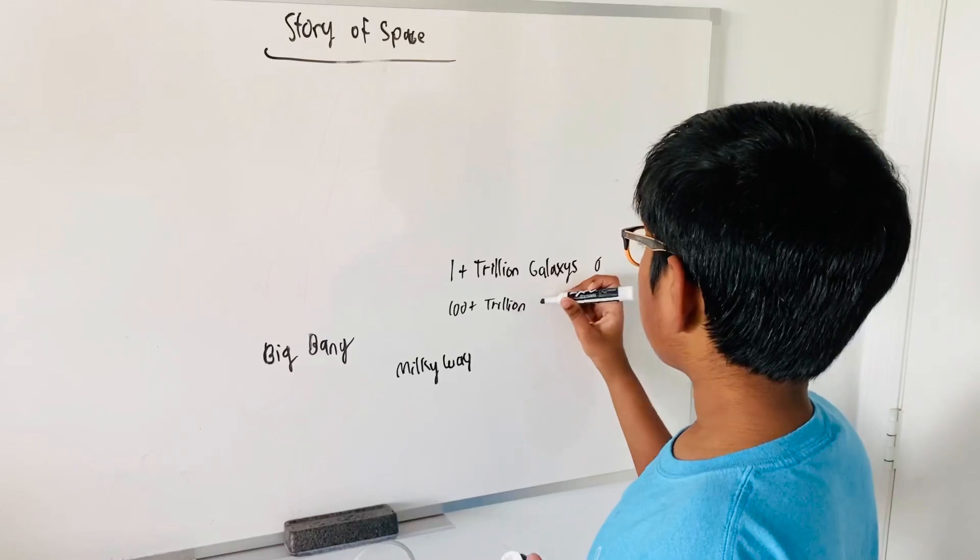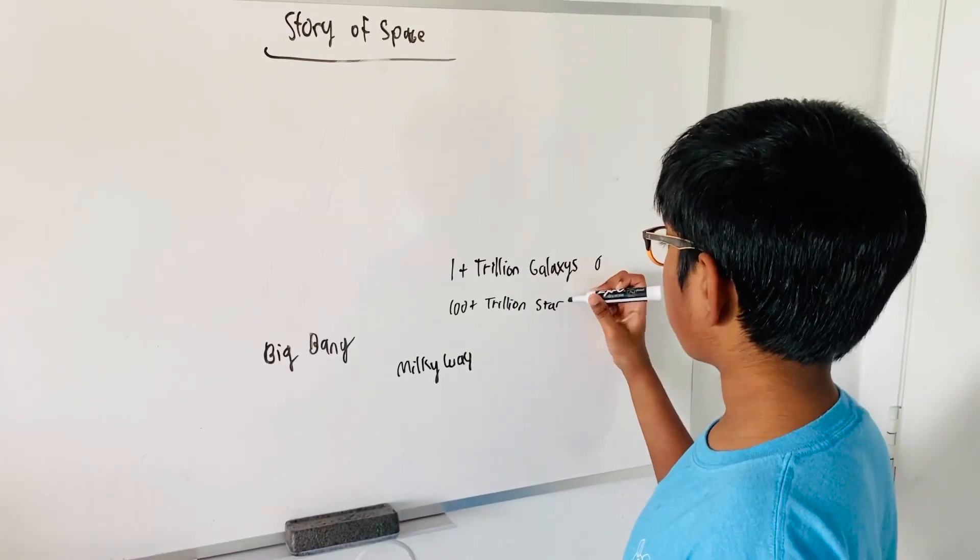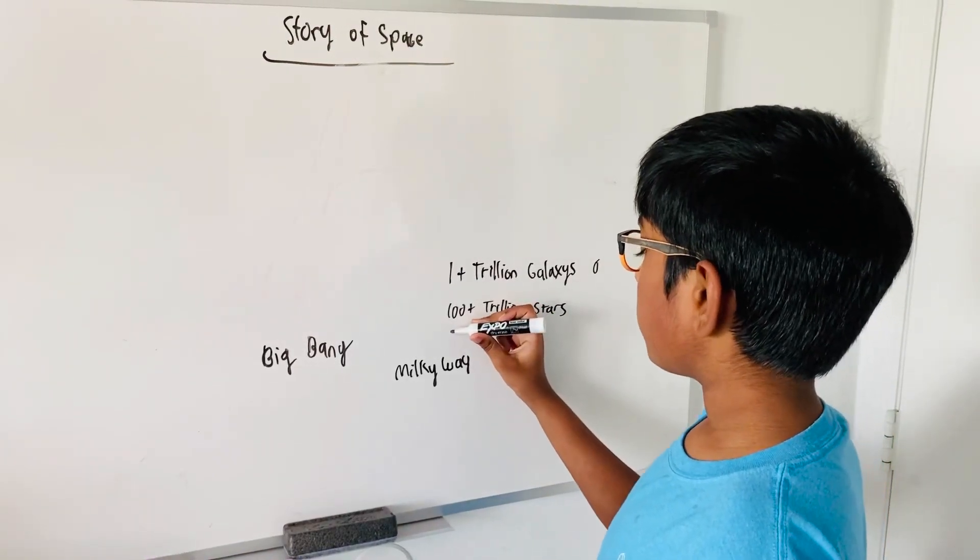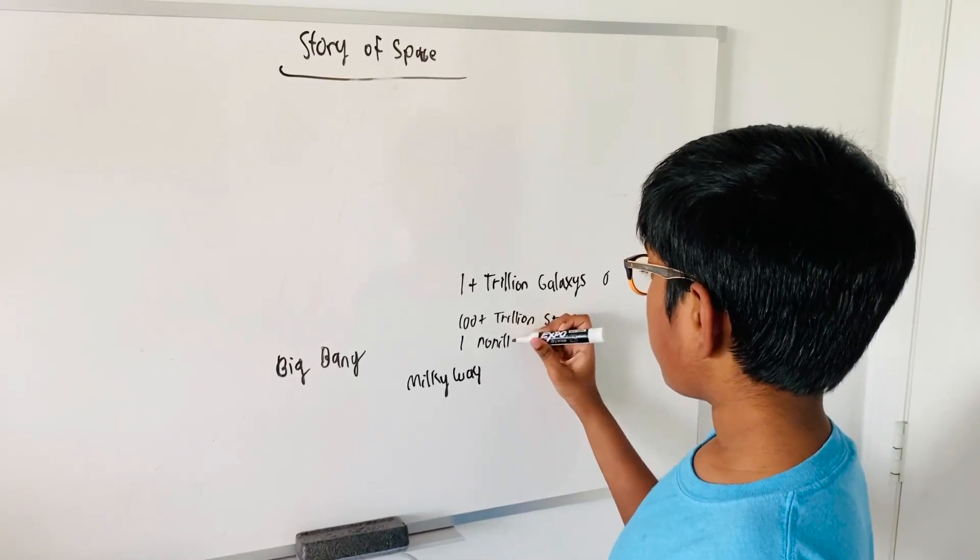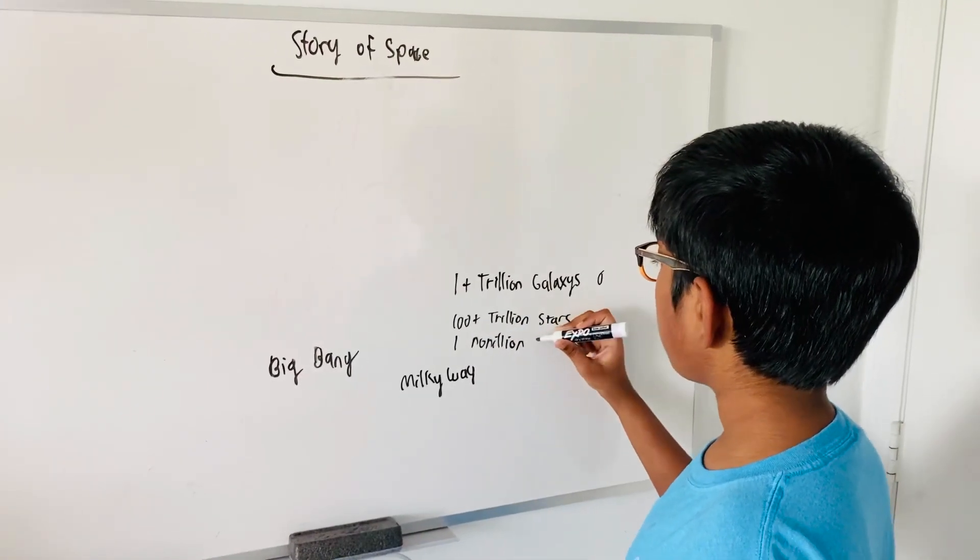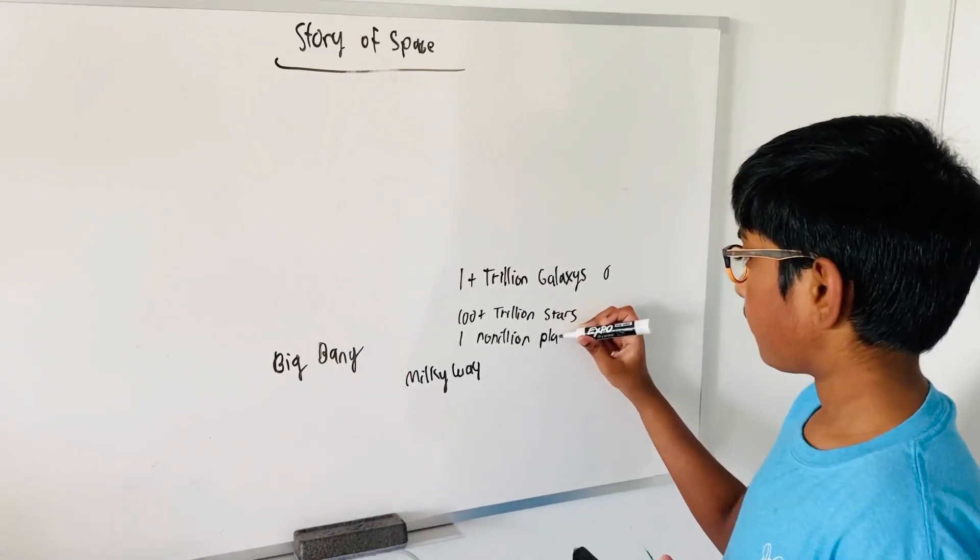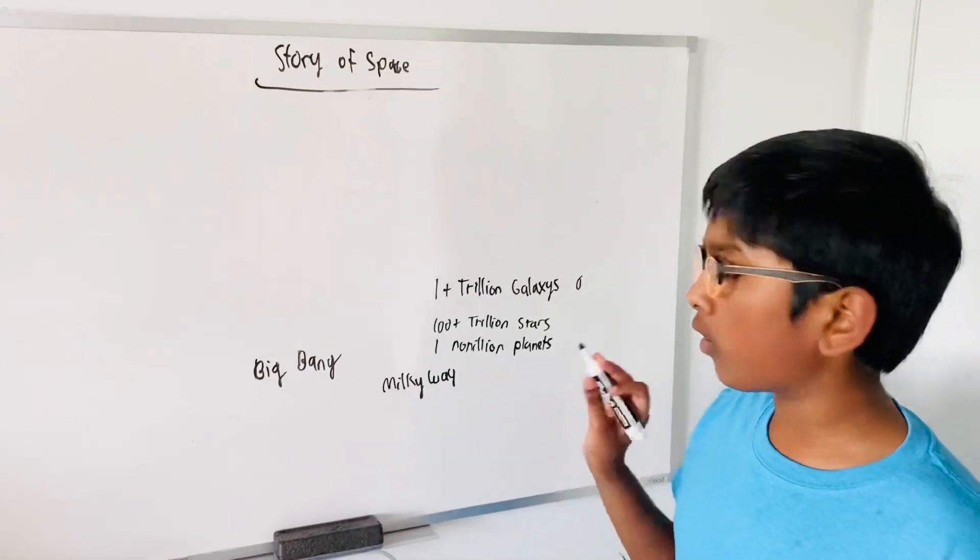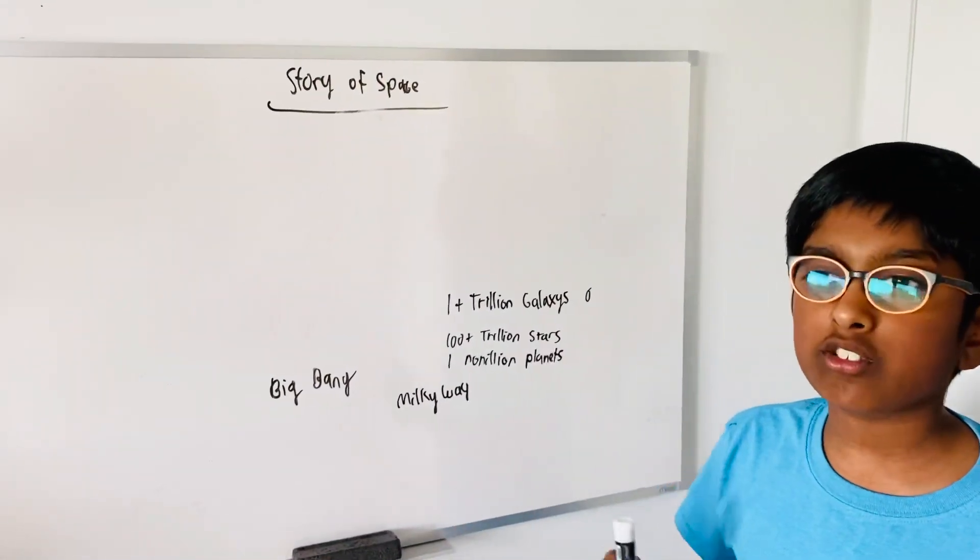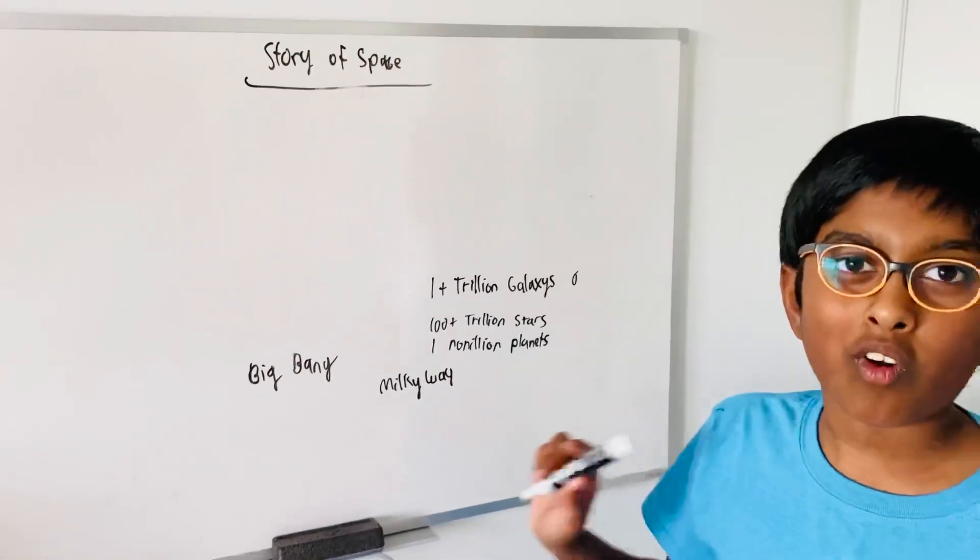There are one plus trillion stars in the universe, and there are more than one nonillion planets in the whole universe, including Earth-like planets and different kinds of planets.